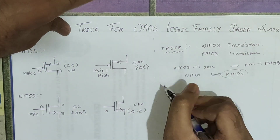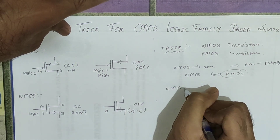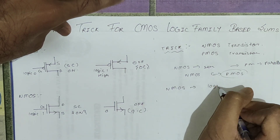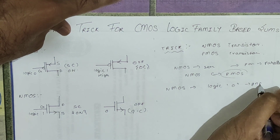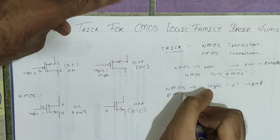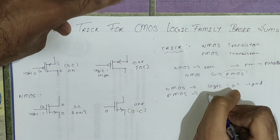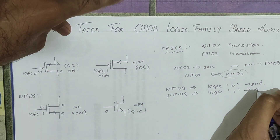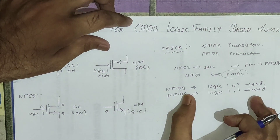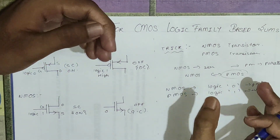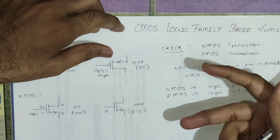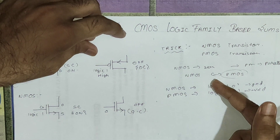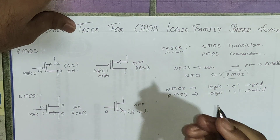One thing to note is that NMOS is best capable of providing logic 0, basically ground, and PMOS is best suitable for providing logic 1, basically VDD. That is why most of the time PMOS is on the upper side connected to VDD and NMOS is on the lower side connected to ground.